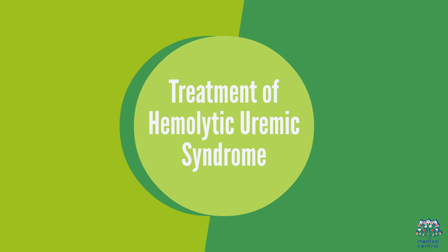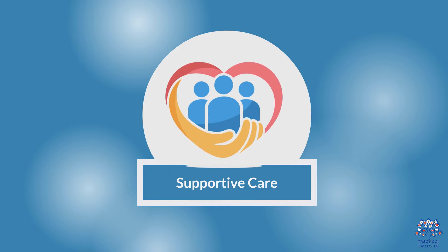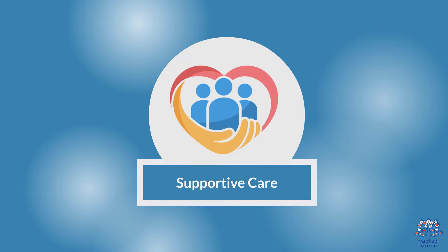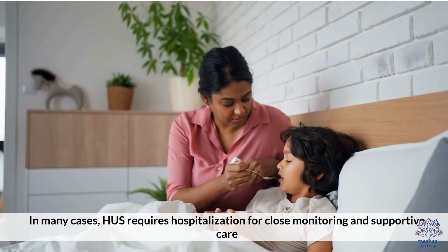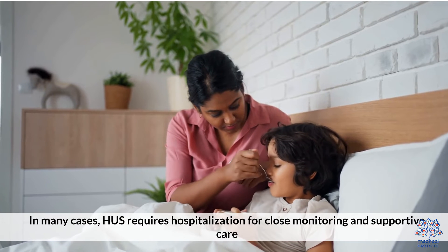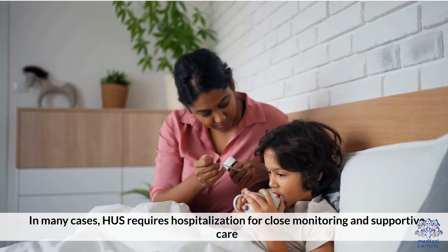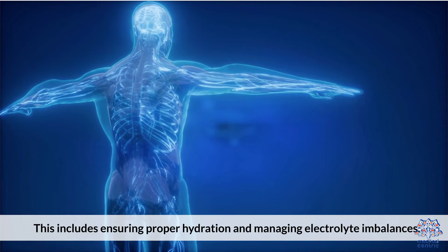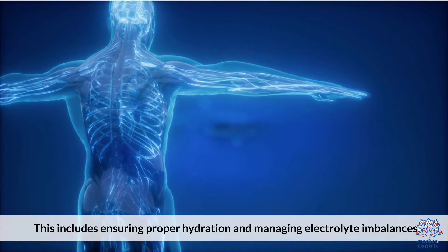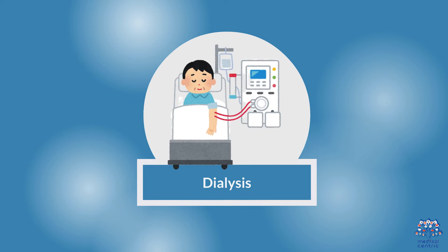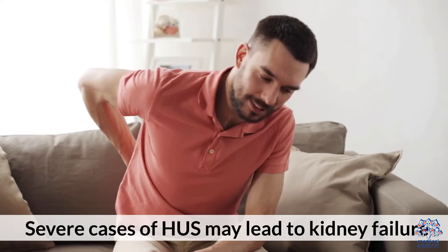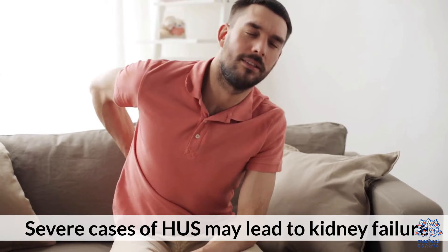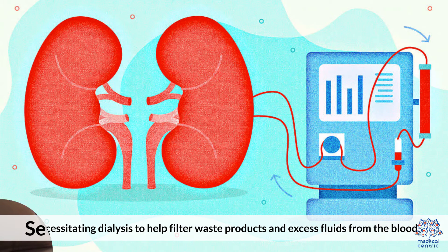Treatment of Hemolytic Uremic Syndrome. 1. Supportive Care: In many cases, HUS requires hospitalization for close monitoring and supportive care. This includes ensuring proper hydration and managing electrolyte imbalances. 2. Dialysis: Severe cases of HUS may lead to kidney failure, necessitating dialysis to help filter waste products and excess fluids from the blood.